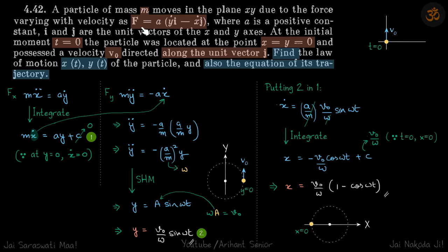We have a mass on which a force applies of the form ẏ î minus ẋ ĵ times a, and initially at t=0, the particle is at the origin and has a velocity v₀ in the y direction. We need to find x and y as functions of time and the equation of trajectory.